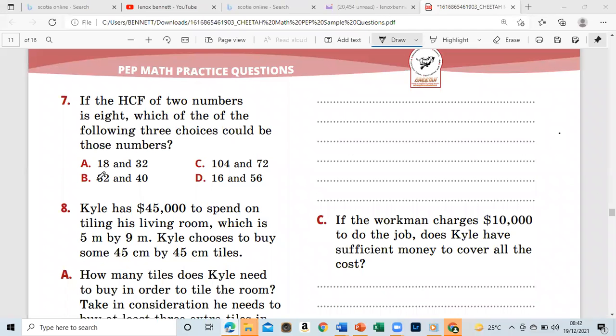Alright guys, I think we just do number seven and eight together. Number seven says if the highest common factor of two numbers is eight, which of the following three choices could be those numbers? So what we have to do is examine the numbers and see which one of them has the highest common factor of eight.